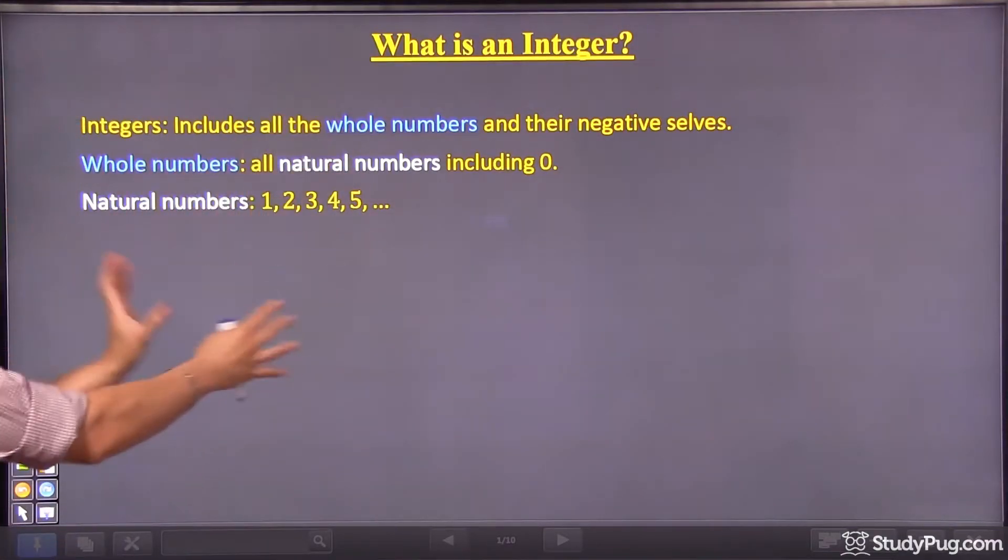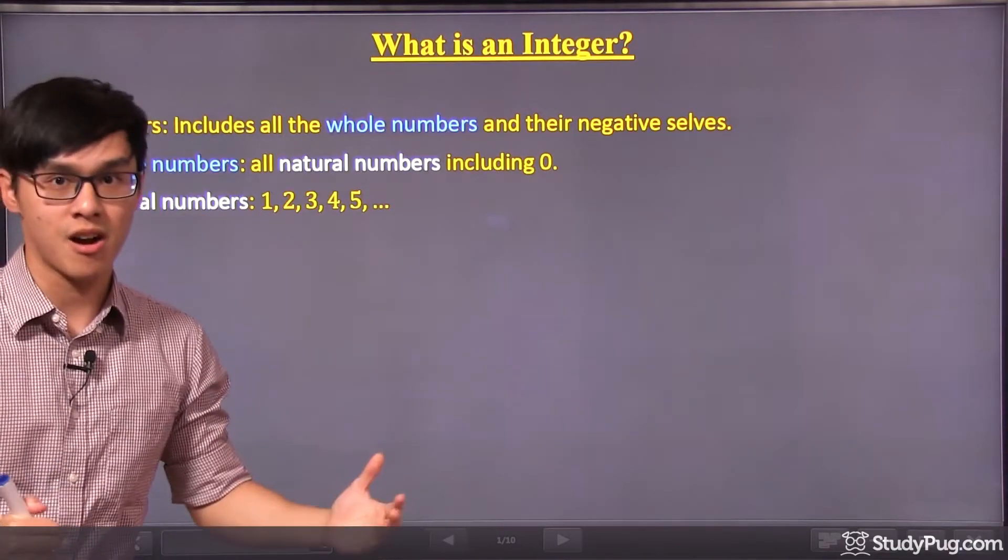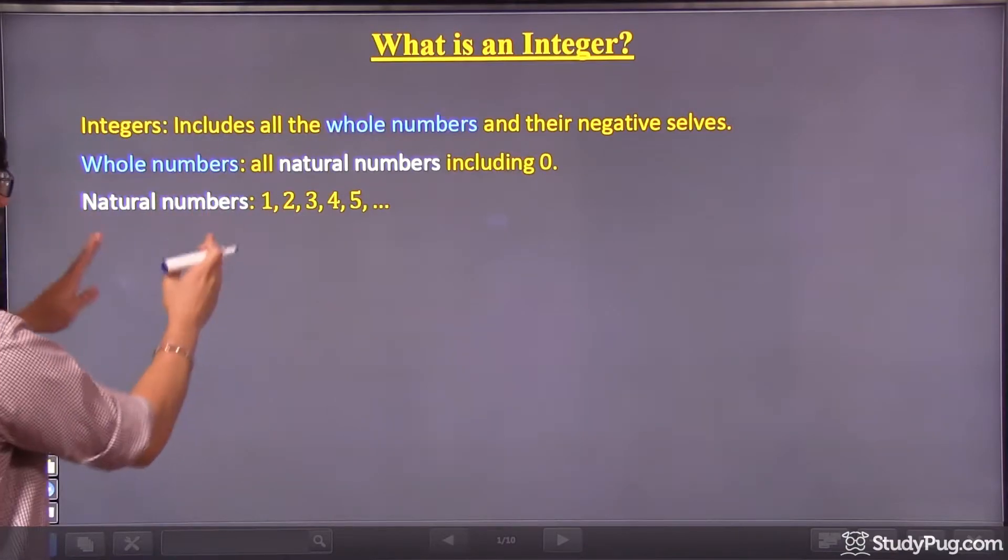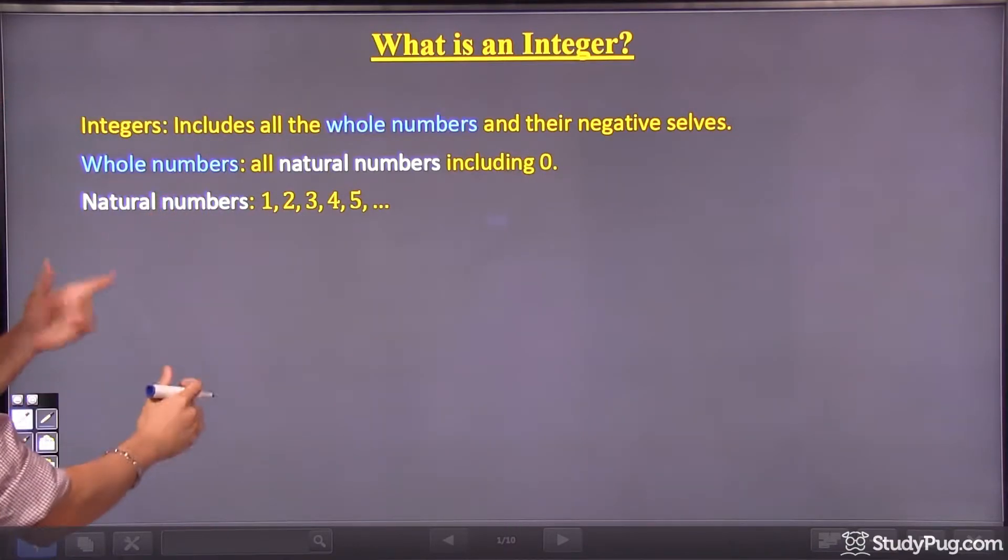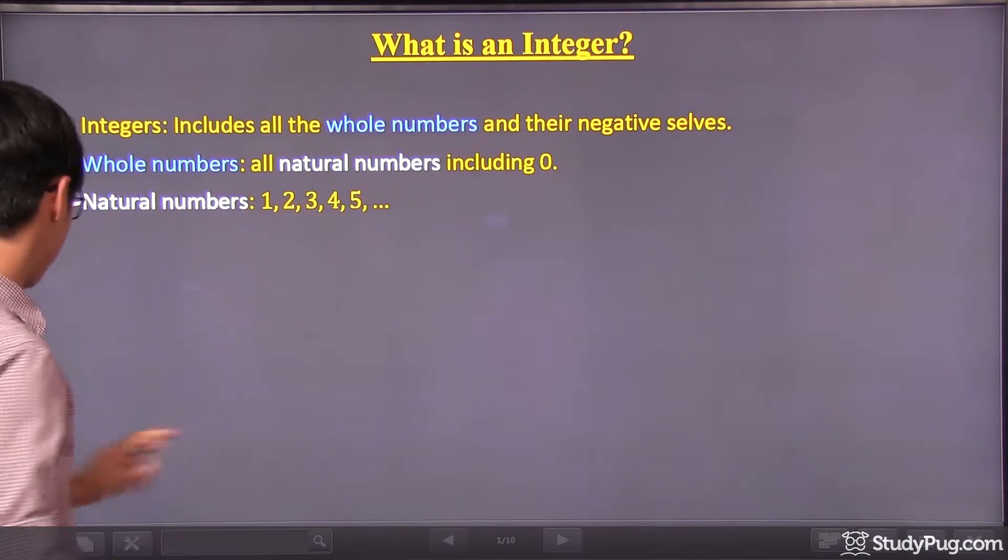So let me wrap up the whole concept and show you what integers really are. So first of all, we have natural numbers. We're now working backwards to define integers. Natural numbers are any numbers starting from one: one, two, three, four, five, so on and so forth.